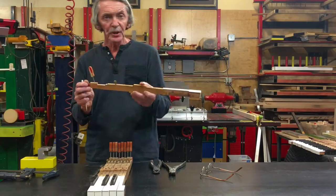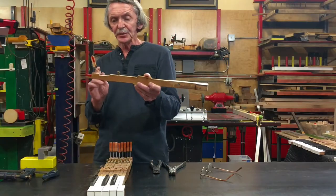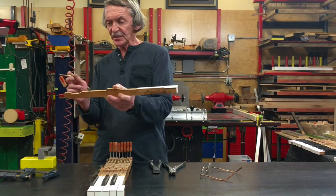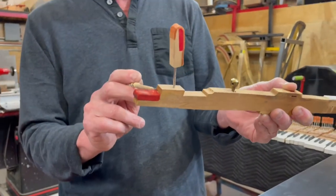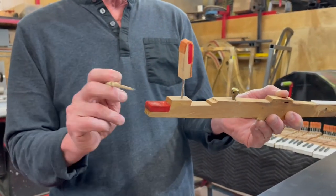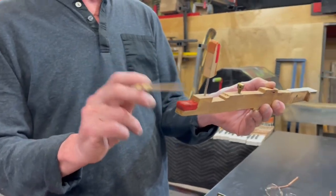Today we want to show you two tools that you need for extracting back checks, that's the piece that wears out, and to take off the back felt on the key.